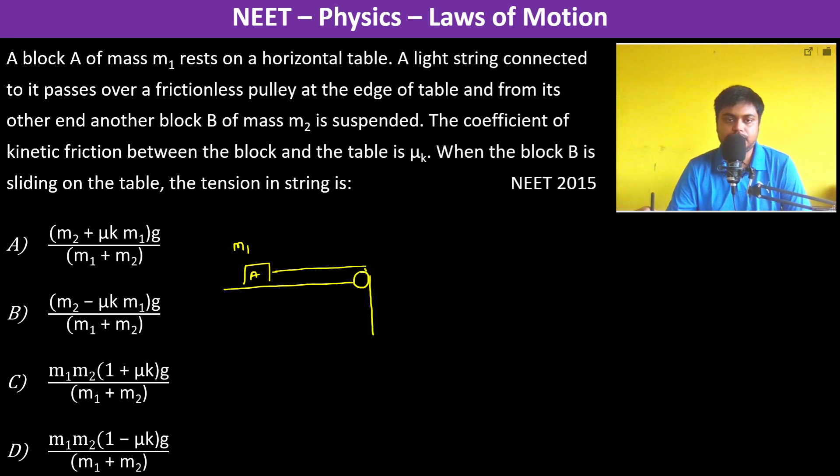From its other end, another block B of mass M2 is suspended. The coefficient of kinetic friction between the block and the table is μk. When block B is sliding on the table, the tension in the string is—we have to find the tension in the string.